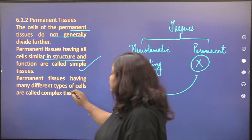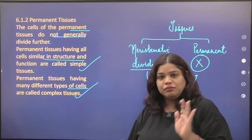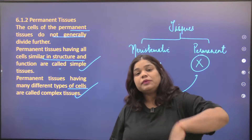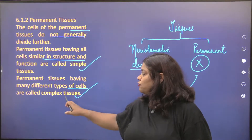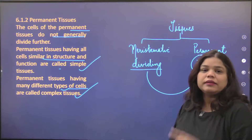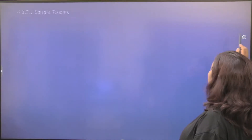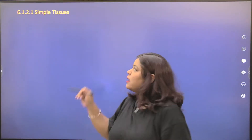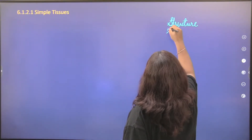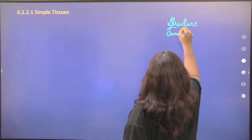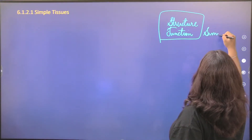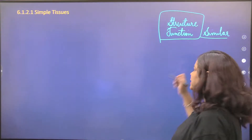Permanent tissues having many different types of cells are called complex tissues. In simple tissues, the structure and function are similar. In complex tissues, the cells are different but serve related functions — we will see this when we study xylem and phloem. A simple tissue is made up of only one type of cells.